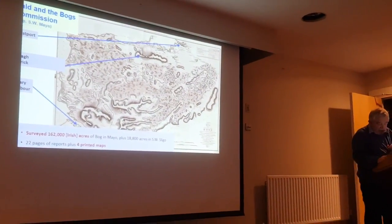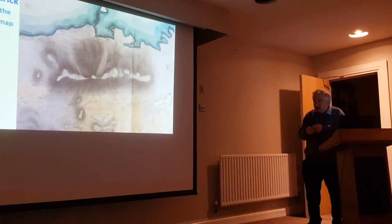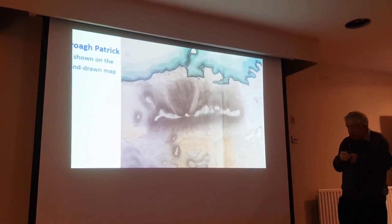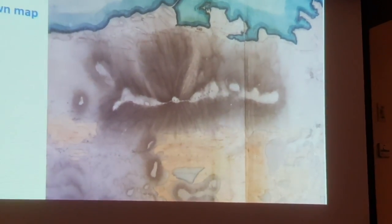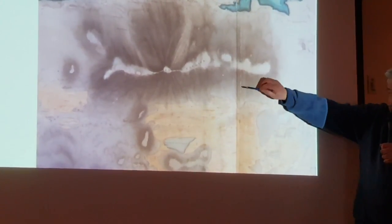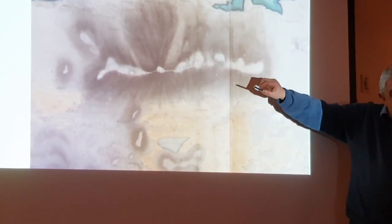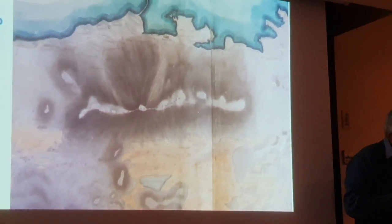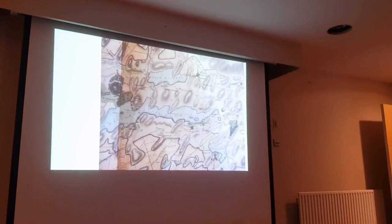It's very different from what he did in his manuscript maps. This is part of Bald's manuscript map of the southwest of Mayo. The orangey-brown colour shows the bogs. He shows Croagh Patrick on this map, and you can see it's quite a nice, artistic representation of Croagh Patrick.